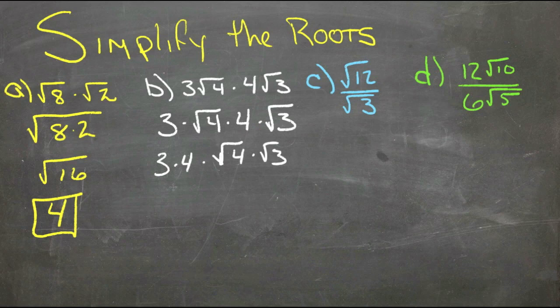3 times 4 is 12. 12 times the root of 4, which is 2, times the root of 3. 12 times 2 is 24. So that gives us 24 roots of 3.